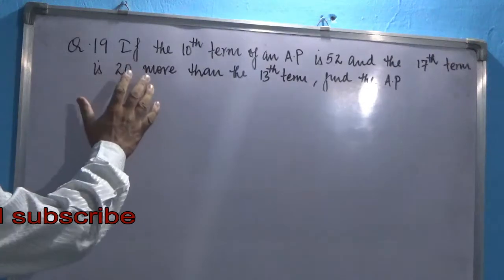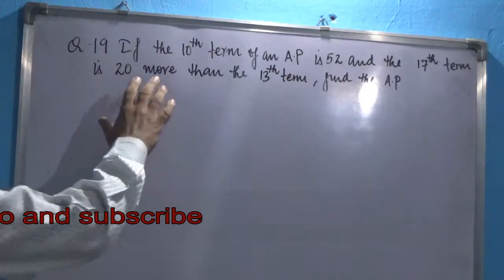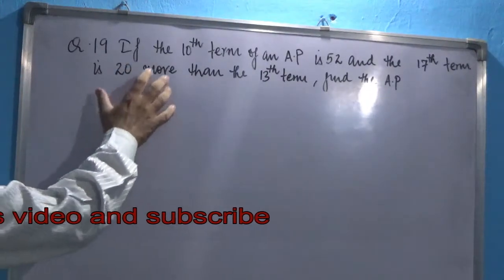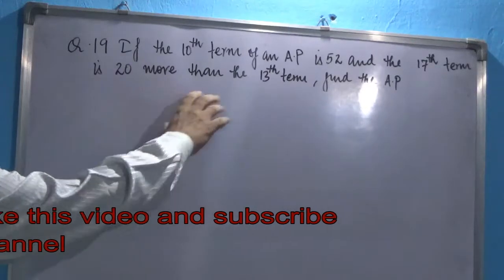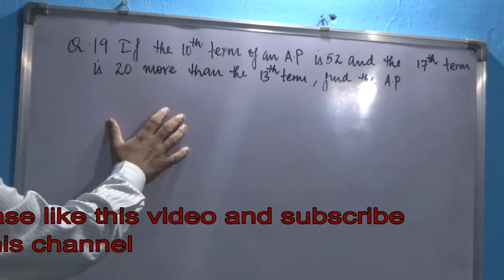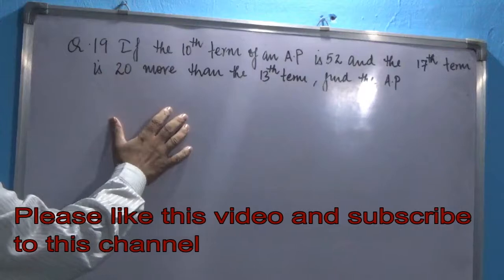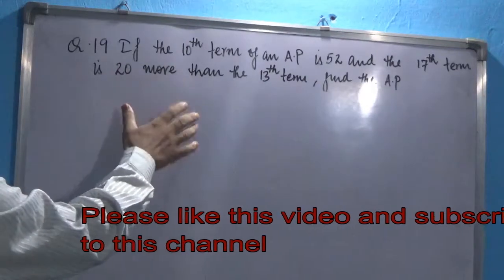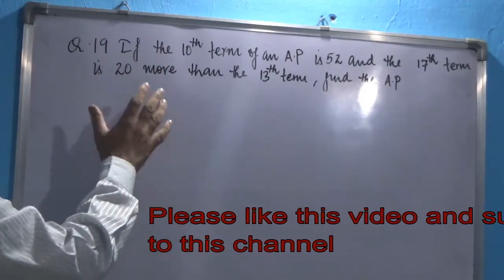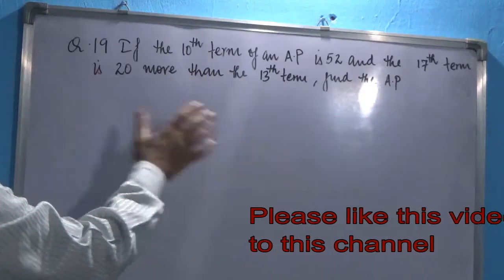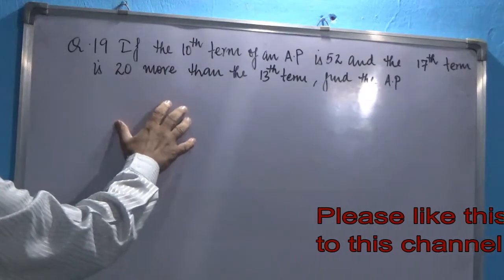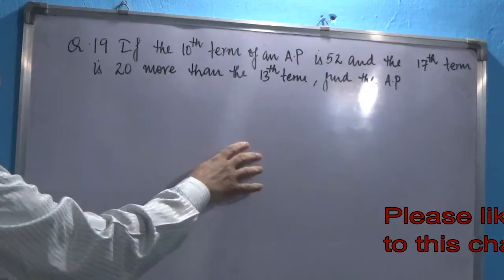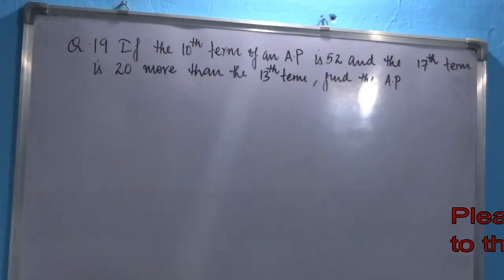This is question number 19 of section C, and this question belongs to arithmetic progression. Let me read this question. If the 10th term of an AP is 52, and the 17th term is 20 more than the 13th term, then find the AP.